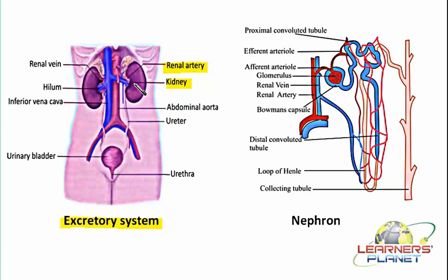These renal arteries carry the blood and transport it into the kidney. Once the blood is filtered, it has to be transported further throughout the entire body, and prior to that it has to be carried to the heart for oxygenation. This filtered blood is further transported into the renal vein, which receives the filtered blood and transfers it to the heart.